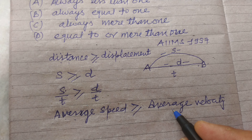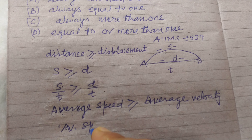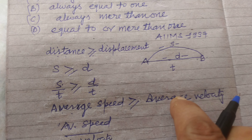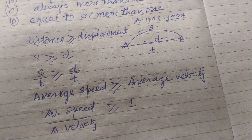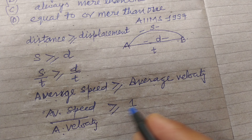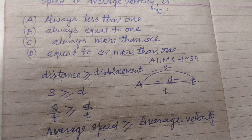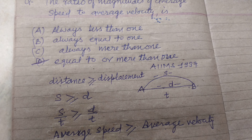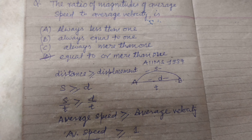So average speed over average velocity gives us a ratio greater than or equal to 1. Therefore, the ratio of average speed to average velocity is always greater than or equal to 1, and the answer is option D: equal to or more than 1. I hope you got it. Thanks for watching.